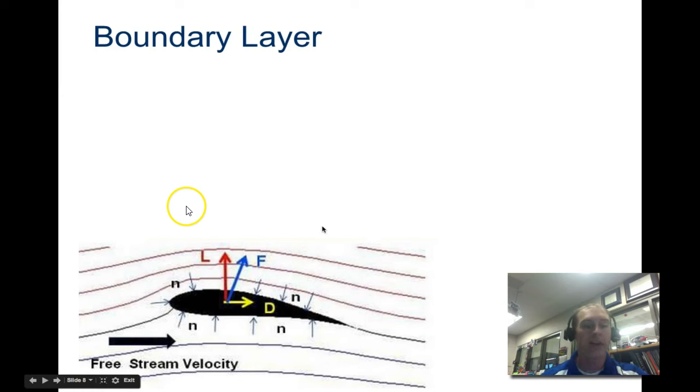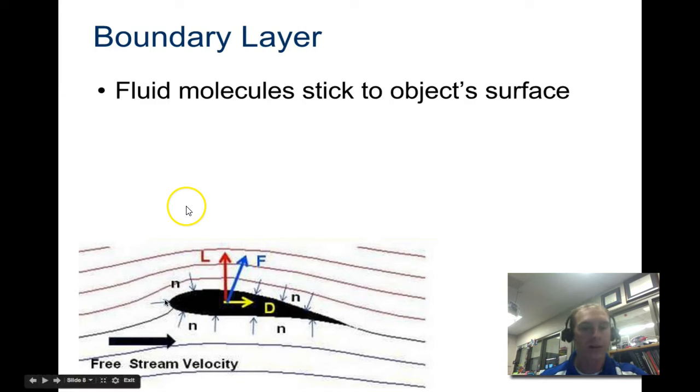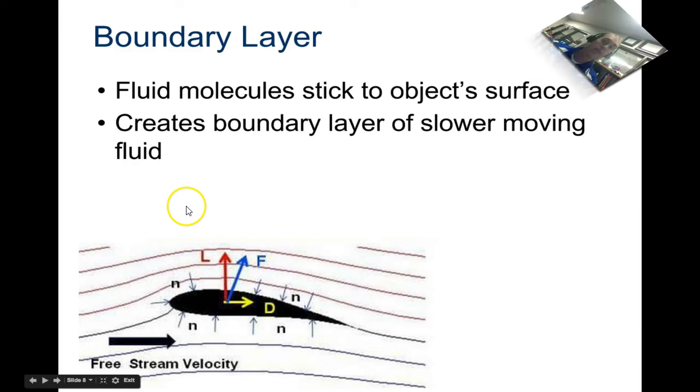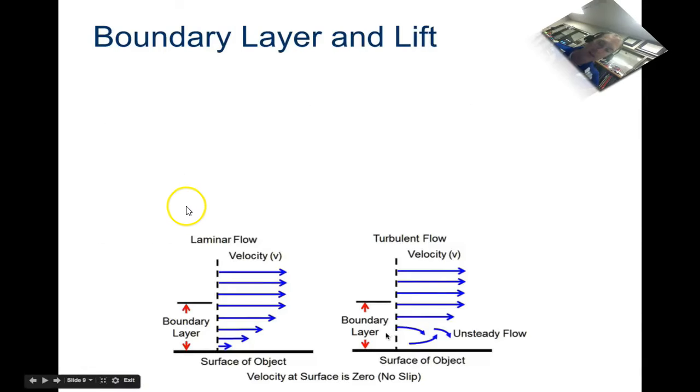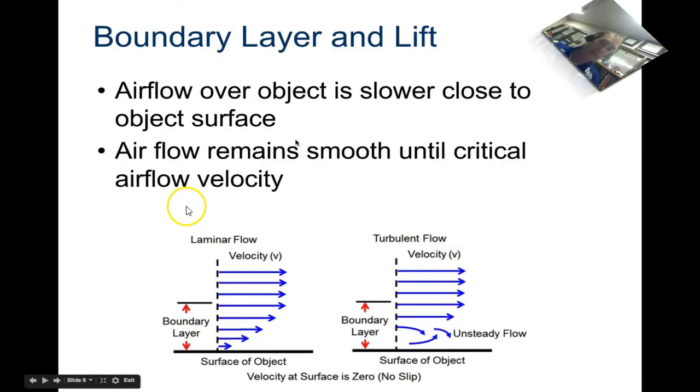Now let's take a look at boundary layers. Boundary layers are where all the fluid molecules stick to this object surface right around the edge of this airfoil. The boundary layer is actually a slower-moving fluid, and that is crucial to wing performance. Air moves slower closer to the surface of the wing. As we get further from the surface, air is actually moving by faster.